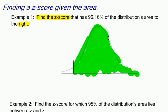Or the green area is what's given to us, and what we're trying to find is this z-score. I don't know what it is.